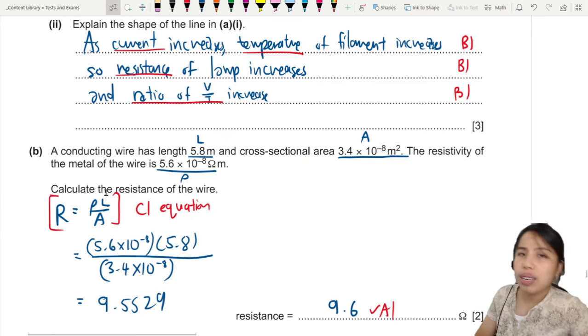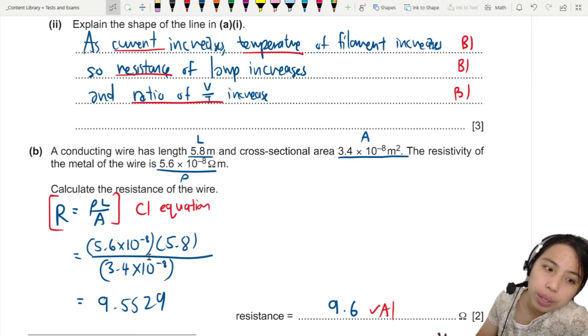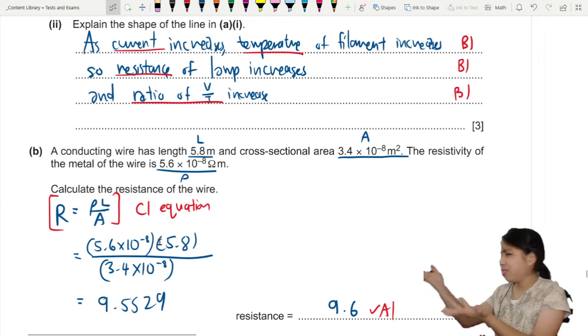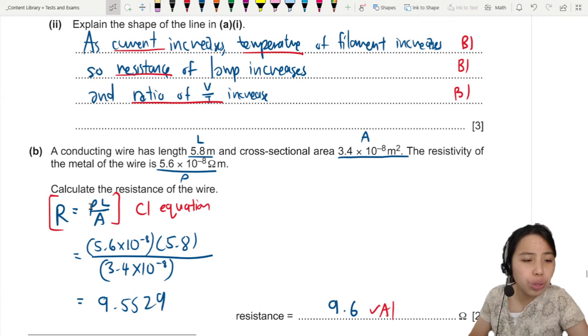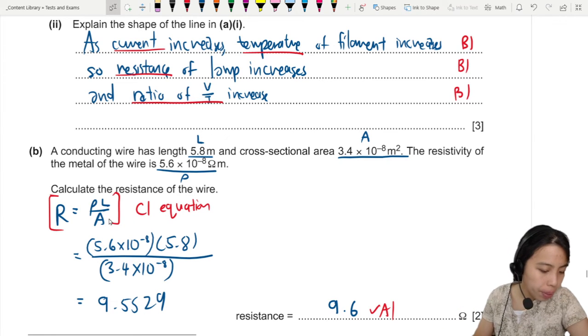Now if you did not write this equation and just throw numbers here, I have to guess that I think you know the equation. But if any one of these numbers are wrong, then I'm like, I have no idea what you're doing. No idea. So to be safe, write equation first. Safer.